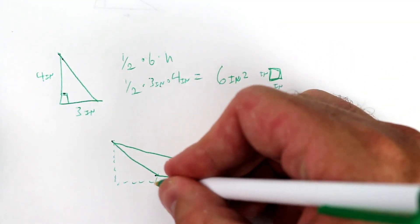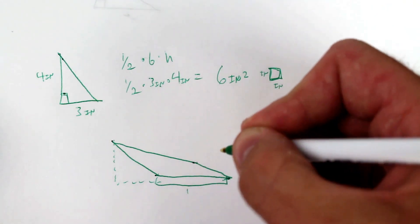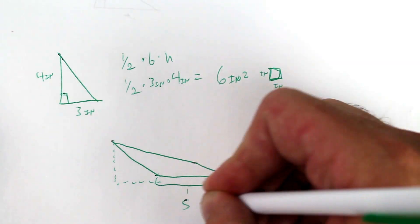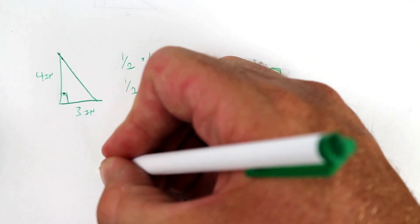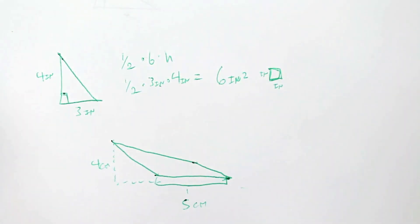So your base will be here. We'll say it's five centimeters. And you're drawing your vertical distance from the base to the highest point. Let's say it's four centimeters.